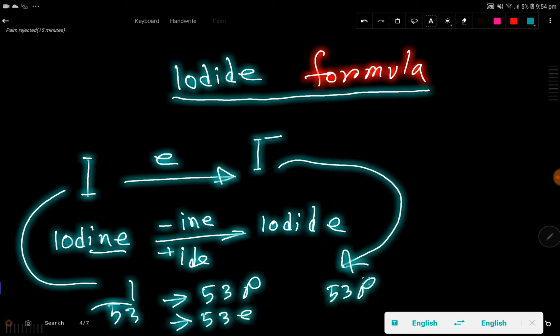53 protons and 54 electrons. That is, in iodide you have one more electron than iodine. So thank you for viewing this video, be well.